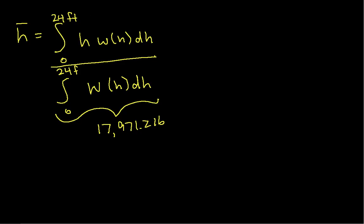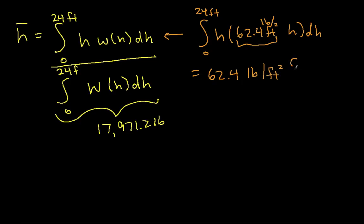Let's evaluate this top integral. We have h times 62.4 pounds per square foot times h dh. So I can take out this constant. So I have 62.4 pounds per square foot times the integral from 0 to 24 of h squared dh. And when I work this integral, I will get h cubed over 3 evaluated at 0 and 24 feet.